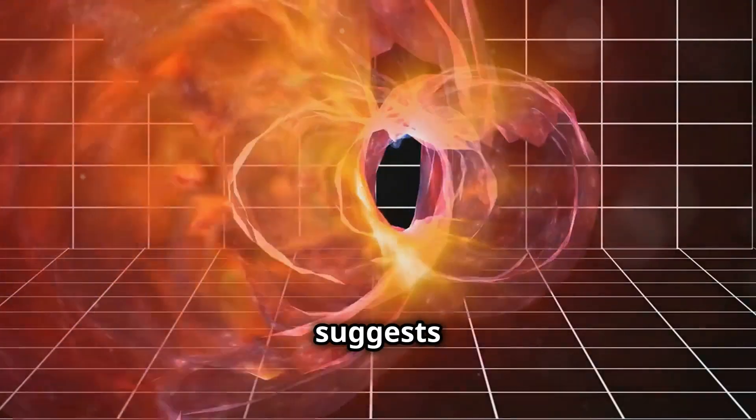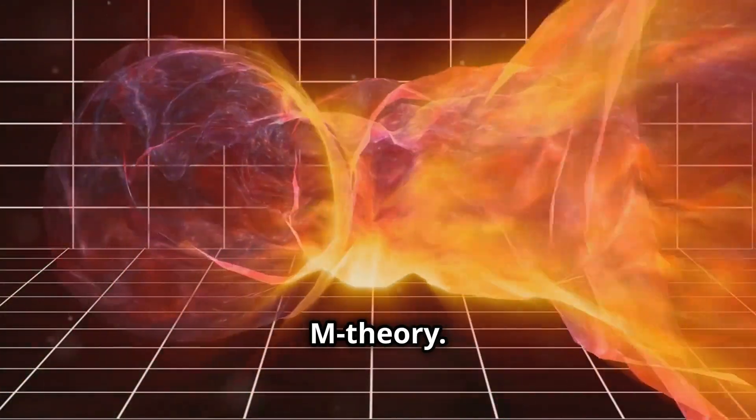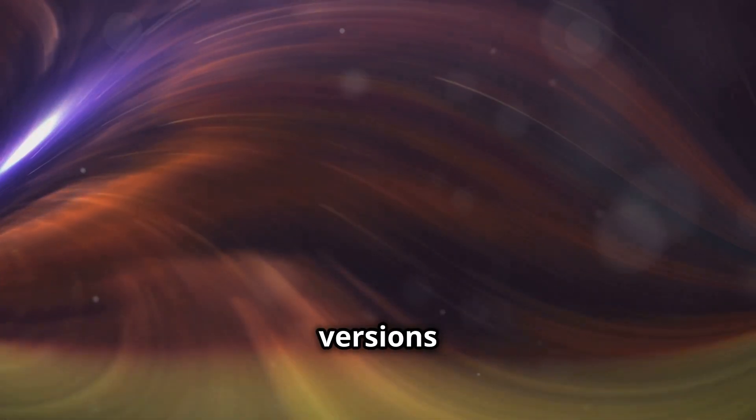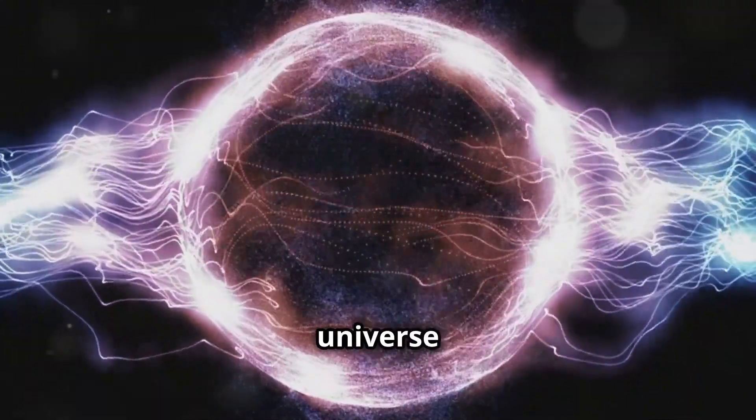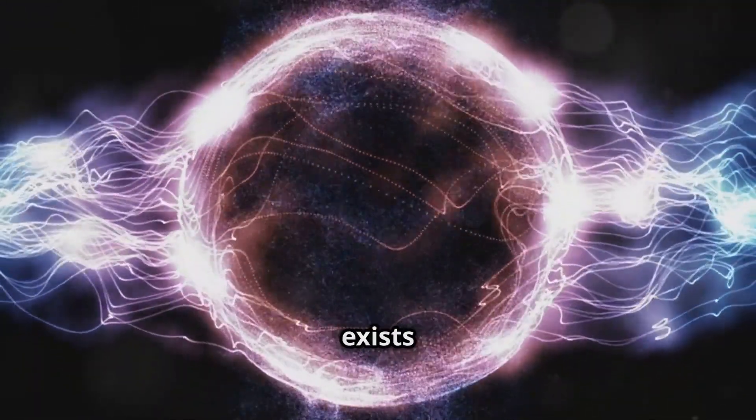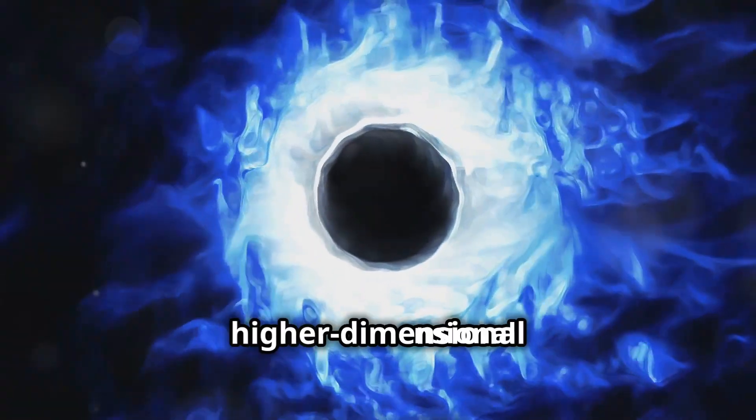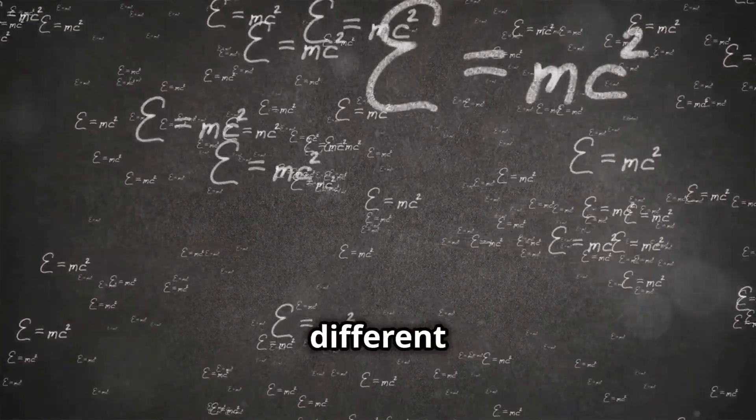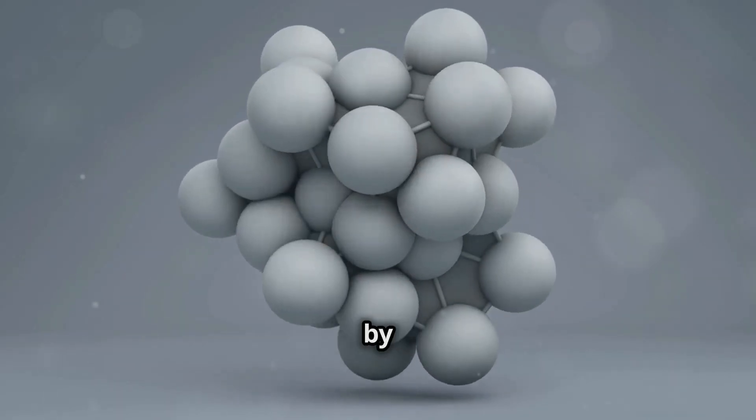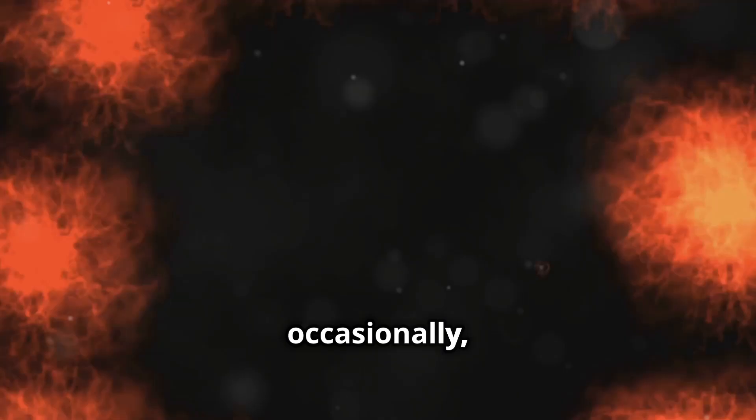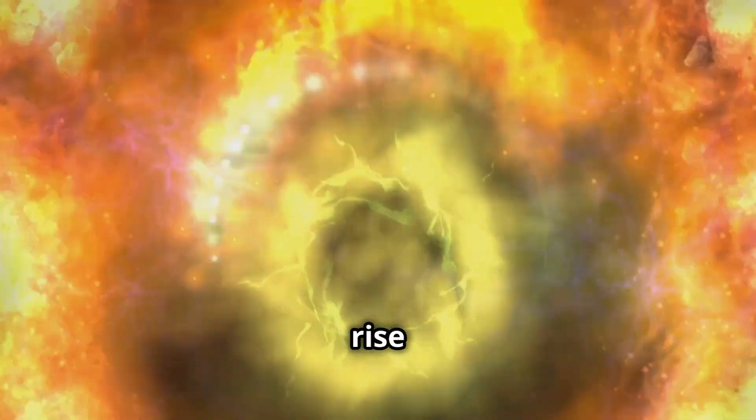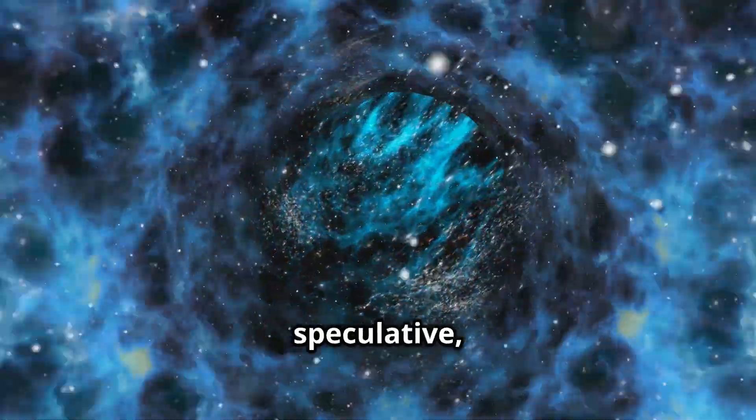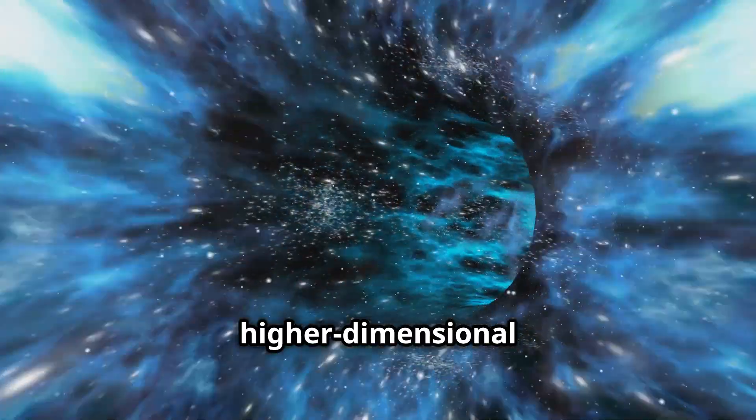Another intriguing theory that suggests the existence of extra dimensions is M-theory. M-theory is a more encompassing framework that attempts to unify all the different versions of string theory. It proposes that our universe is not the only one, but rather exists on a membrane, or brane, floating in a higher-dimensional space. Imagine a stack of pancakes, with each pancake representing a different universe. These universes could be separated by a tiny distance in the extra dimensions, and occasionally they might even collide, potentially giving rise to events like the Big Bang. The idea of a multiverse, while speculative, is a fascinating consequence of these higher-dimensional theories.